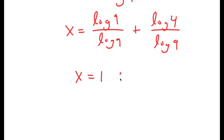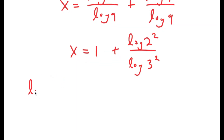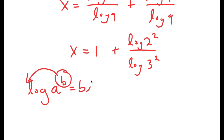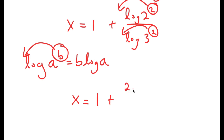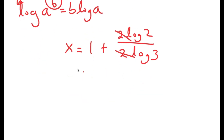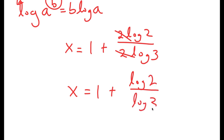So now this is equal to log 9 over log 9 plus log 4 over log 9, which is equal to 1 plus log of 2 squared over log of 3 squared. If I have something in the form log of a to the power of b, I can move the exponent b to the front. So I can move 2 to the front in both places, giving x equals 1 plus 2 times log 2 over 2 times log 3. From here I can cancel out the two 2s, so I get x equals 1 plus log 2 over log 3.